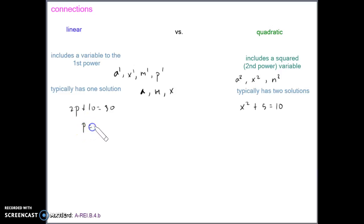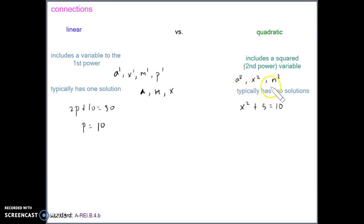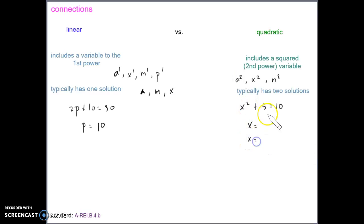So in this case, the solution to this equation would be 10. We only have one value that makes both expressions equal each other. A quadratic includes a squared variable, a variable to the second power, and you'll see this because the variable has an exponent of 2. Linear equations have an exponent of 1 and typically have one solution. Quadratics have an exponent of 2 and typically have two solutions — two values that make this equation true.